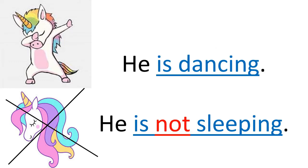Another example: He is dancing — this is a positive sentence. He is not sleeping — this is negative, meaning the action is not going on at the present moment. Notice that not is placed between the helping verb and the present participle form of the verb.